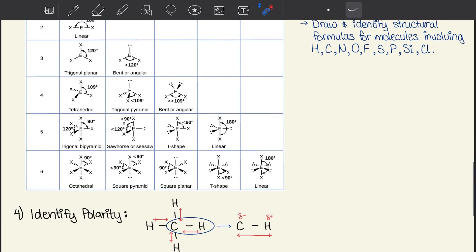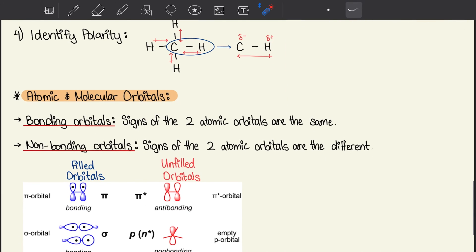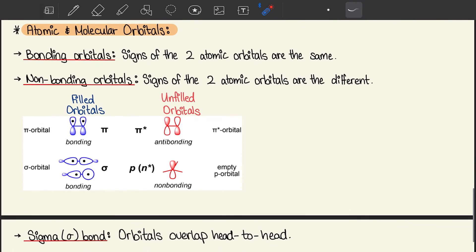Moving forward to atomic and molecular orbitals. We have bonding orbitals where the signs of the two atomic orbitals are the same. Then we have non-bonding orbitals where the signs of the two atomic orbitals are different. Below we have the pi and sigma orbitals. As you can see, the pi bonding ones when filled are both facing the same way. Same thing with sigma, they're both facing the same way. Whereas non-bonding are opposite.